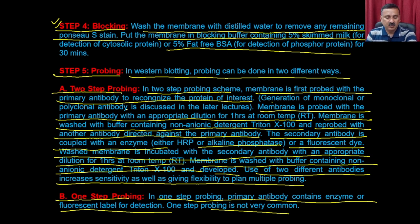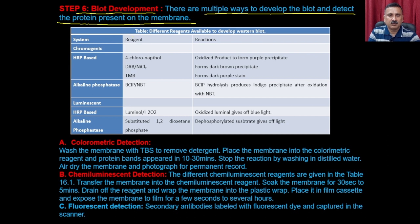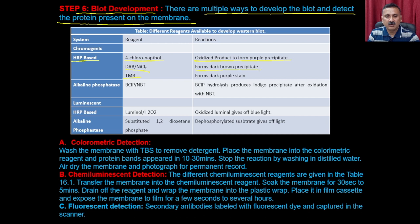Once probing is done, you develop the blot. Step six is blot development. There are multiple ways to detect the protein on the membrane. You can use chromogenic reagents or luminescent reagents. For chromogenic detection with HRP, you can use 4-chloro-1-naphthol (giving a purple precipitate), DAB with nickel chloride (giving a brown precipitate), or TMB (giving a dark purple stain). If the enzyme is alkaline phosphatase, you use BCIP and NBT — the BCIP hydrolysis product forms an indigo precipitate after oxidation with NBT.